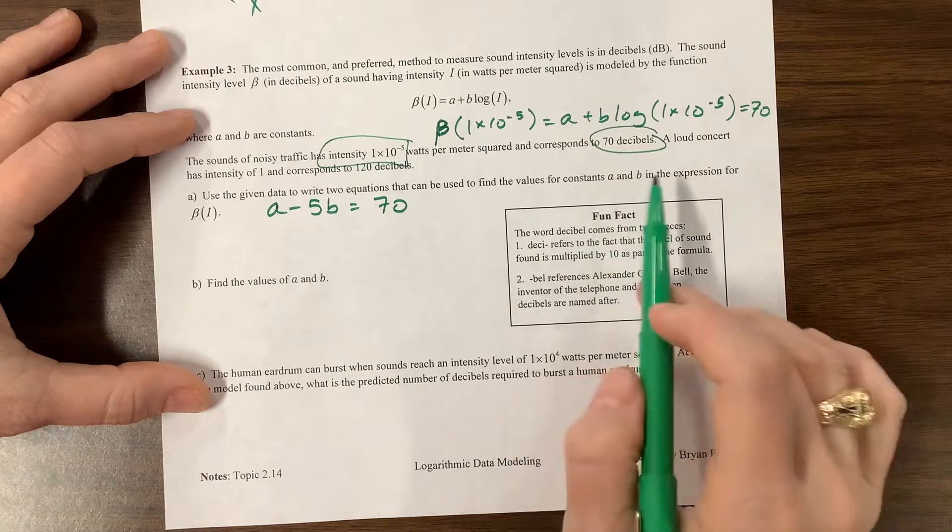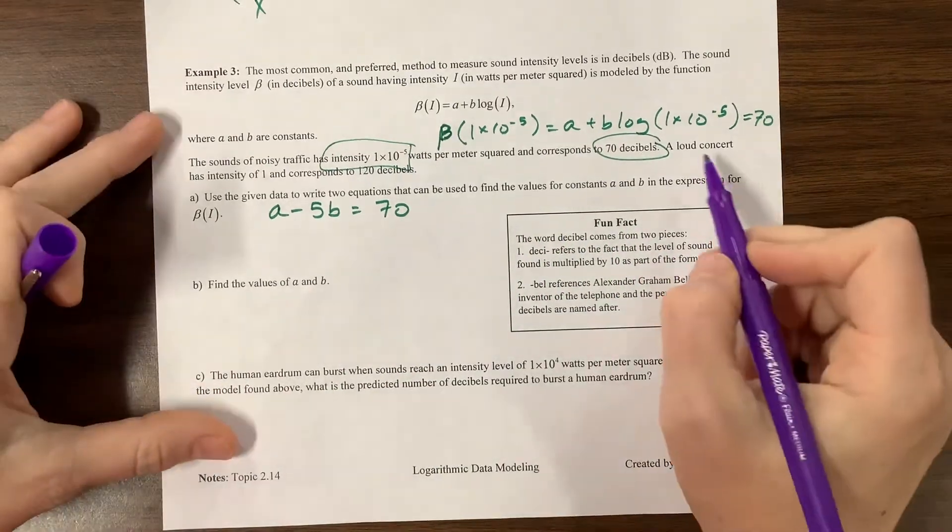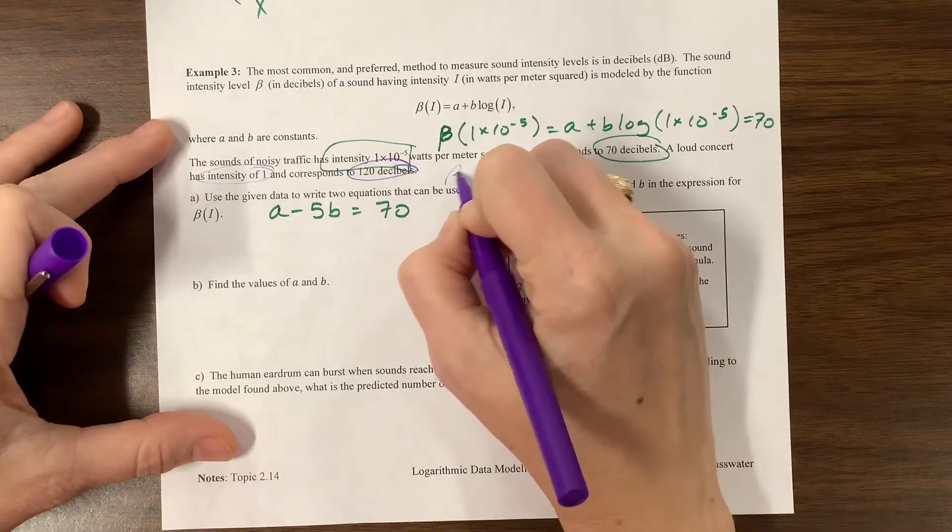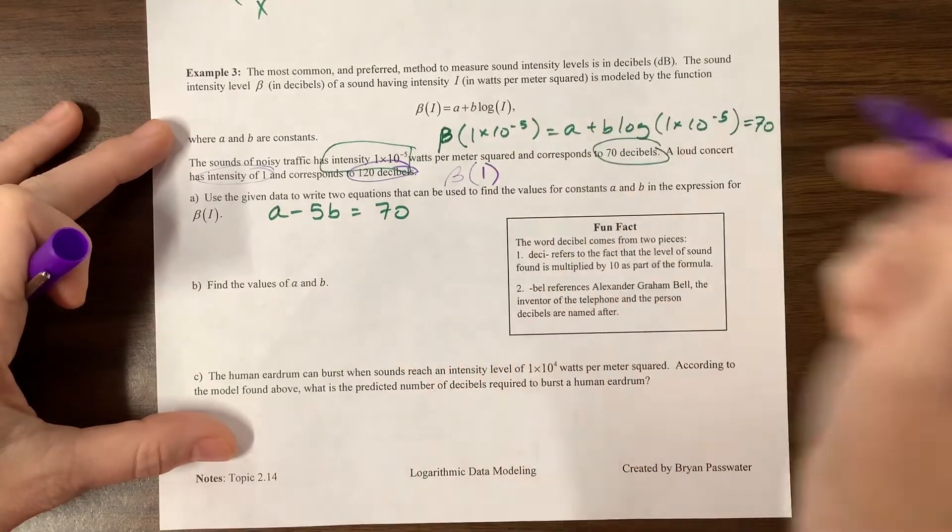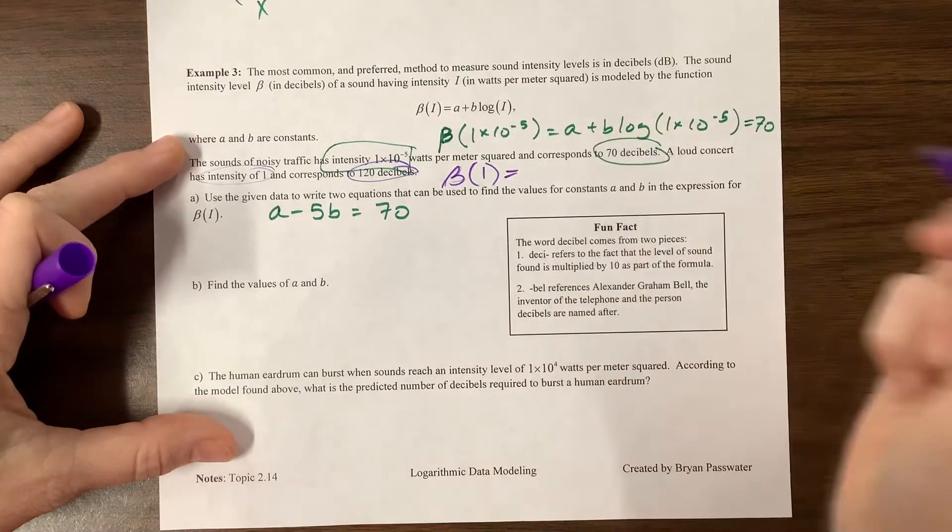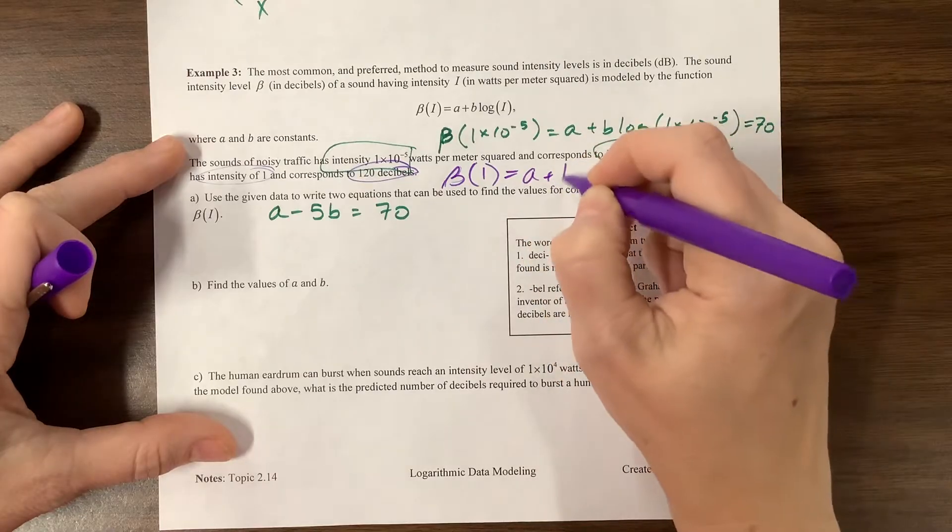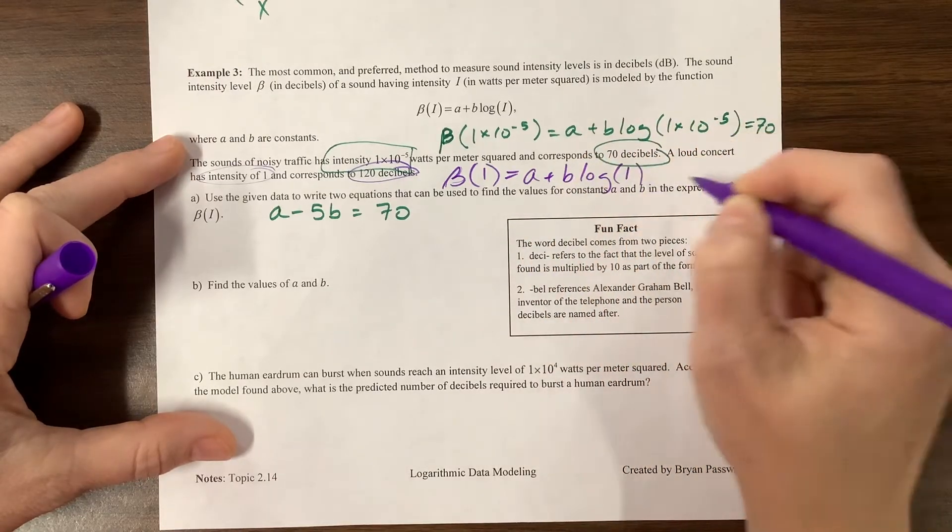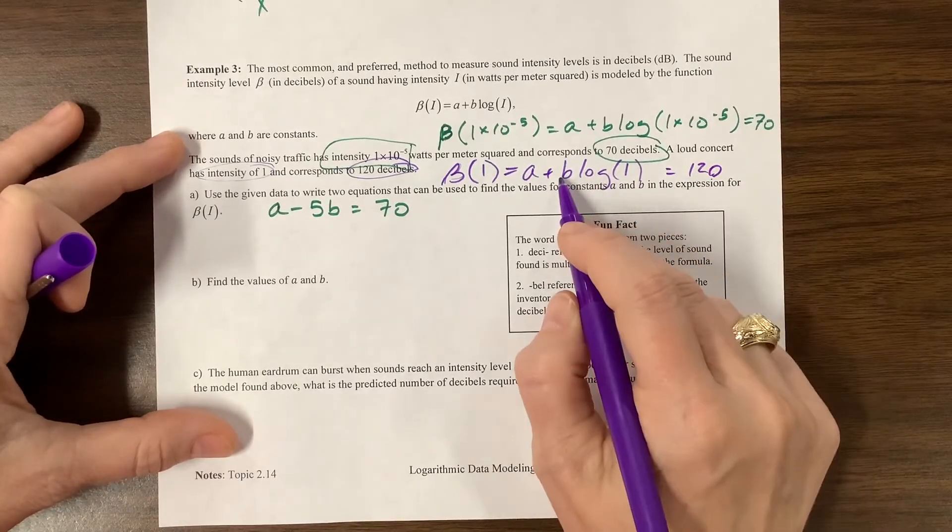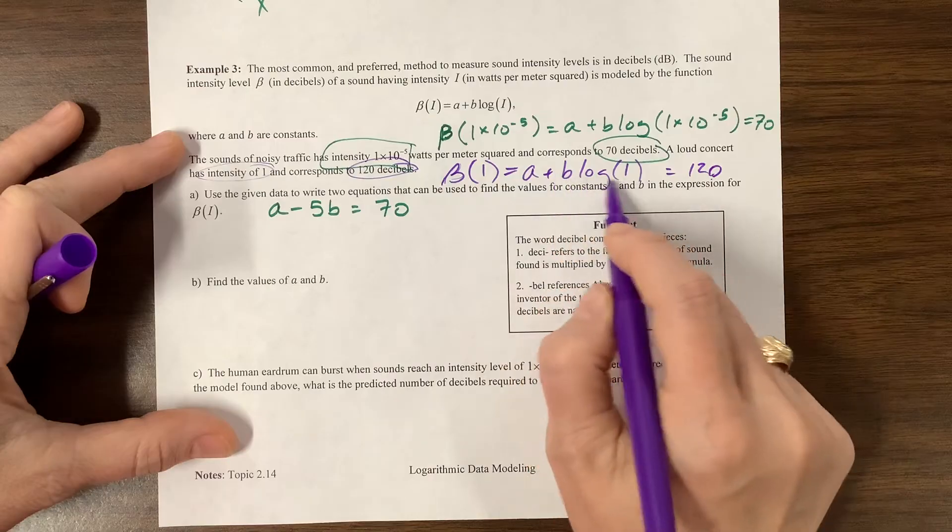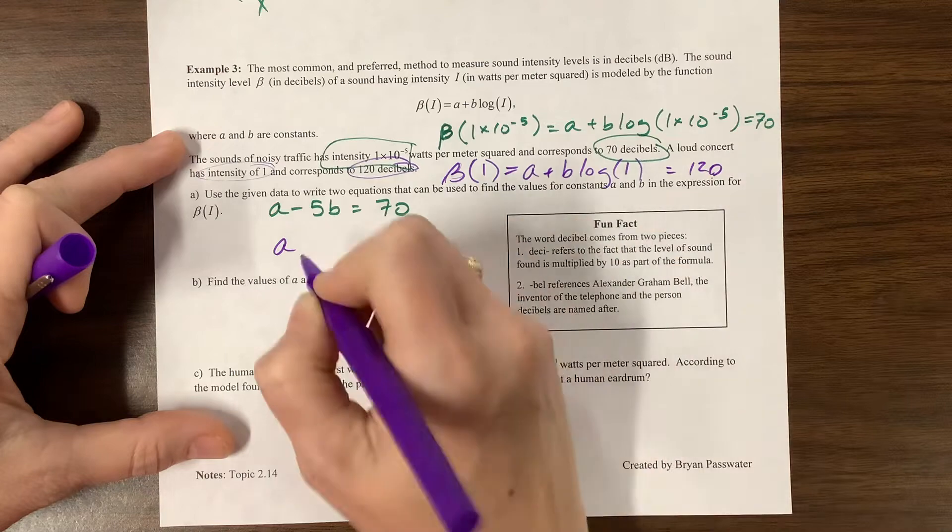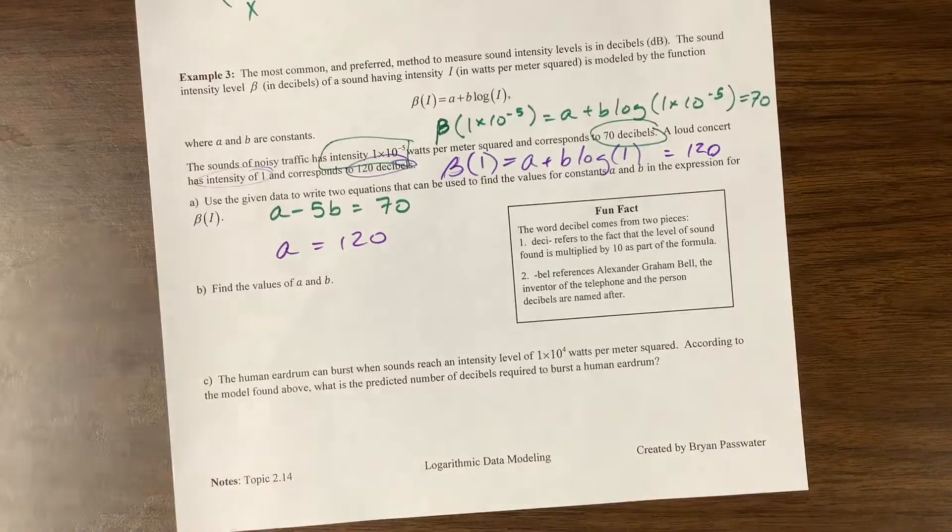The next equation we're using, you know what, let's change colors. Then they tell us a loud concert has an intensity of 1 and it corresponds to 120. So this beta of, oh, my pen is dying. Life is too short for a bad pen, but the video is running, so sorry. A plus B times log of 1 is equal to 120. Well, log base 10 of 1 is just 0. So this B value, it's B times 0, so that's gone. So my other equation is, well, A, if I want to write 0B, but A equals 120.